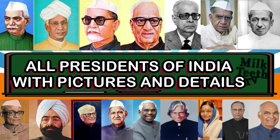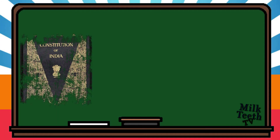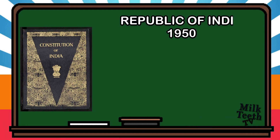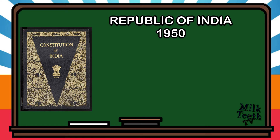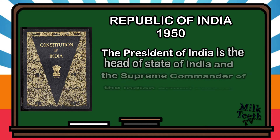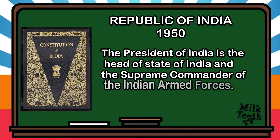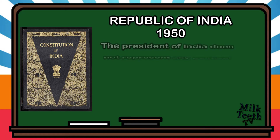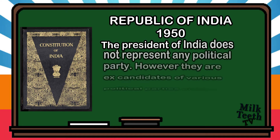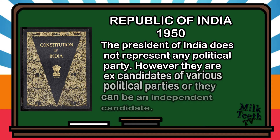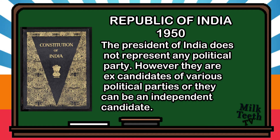Hi, my dear friends. Today we will learn about the presidents of India. Ever since India gained independence in 1947 and became a republic in 1950 with the adoption of the Indian Constitution, it has witnessed 14 presidents. The president of India is the head of the state and the supreme commander of the Indian armed forces. The president does not represent any political party; however, they are usually ex-candidates of various political parties or can be an independent candidate too.